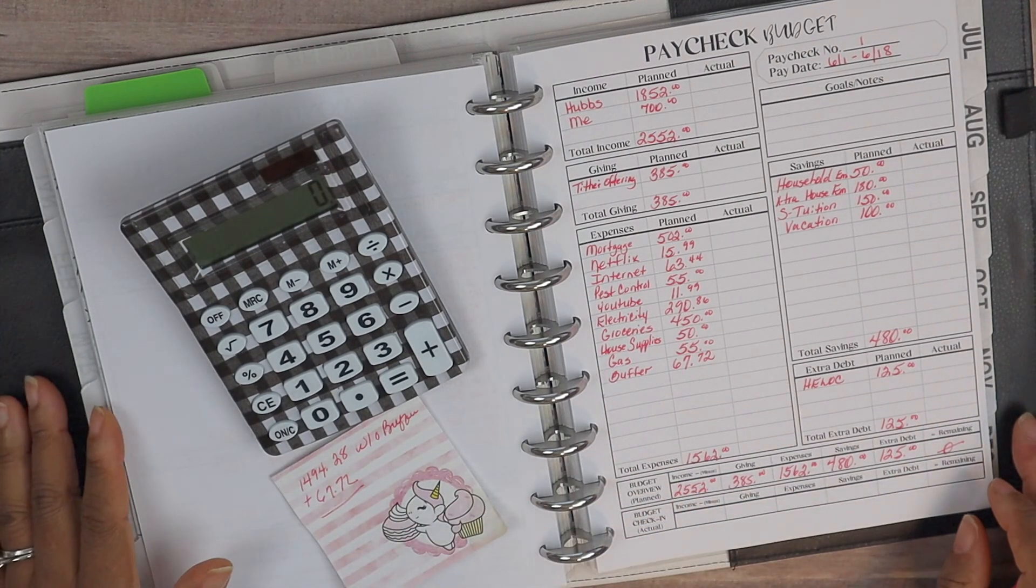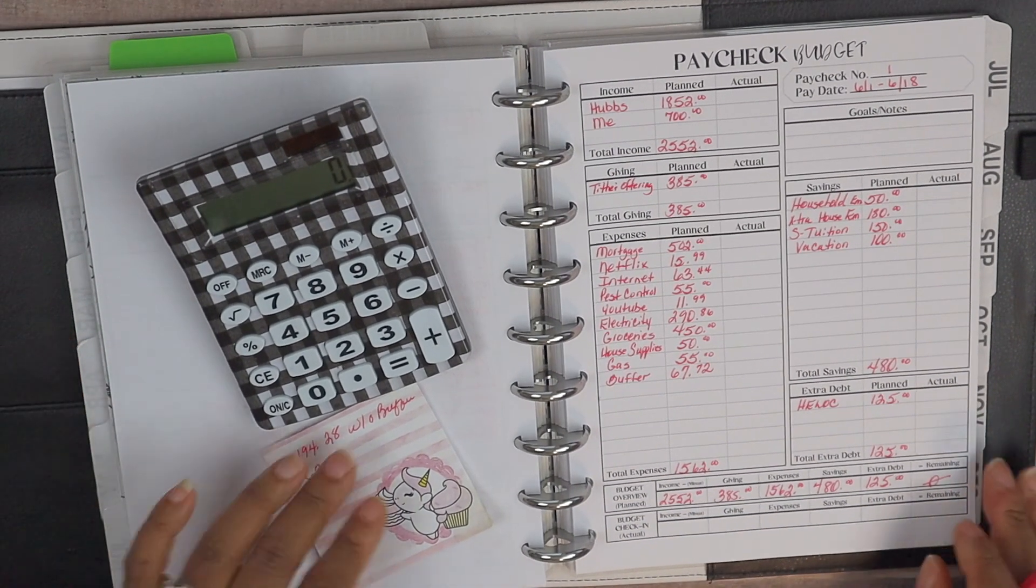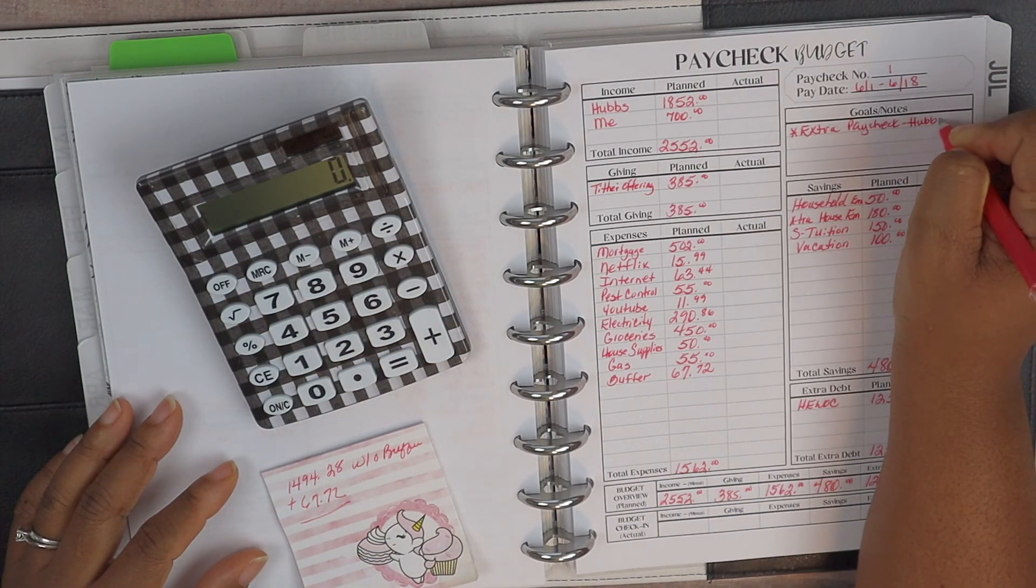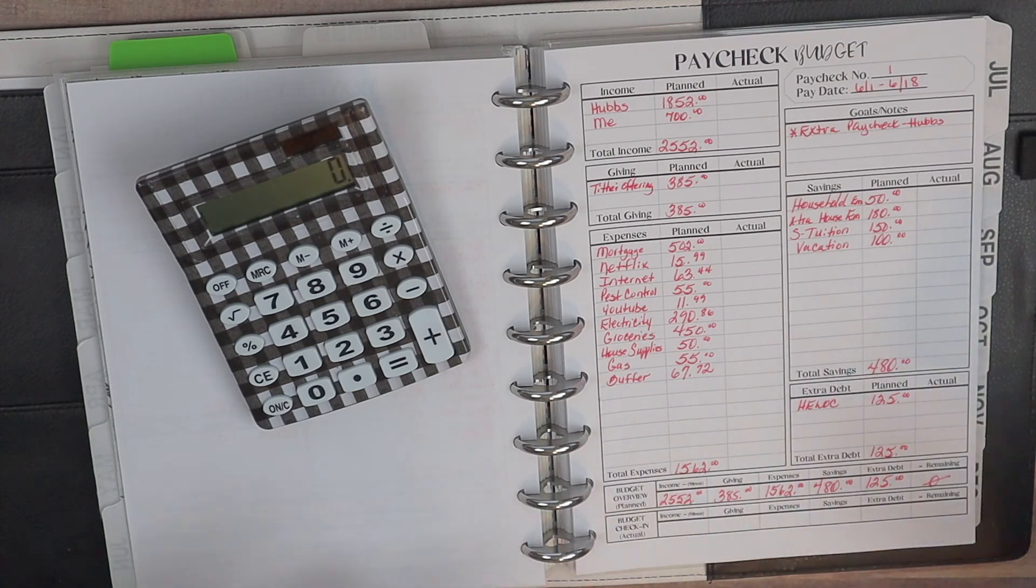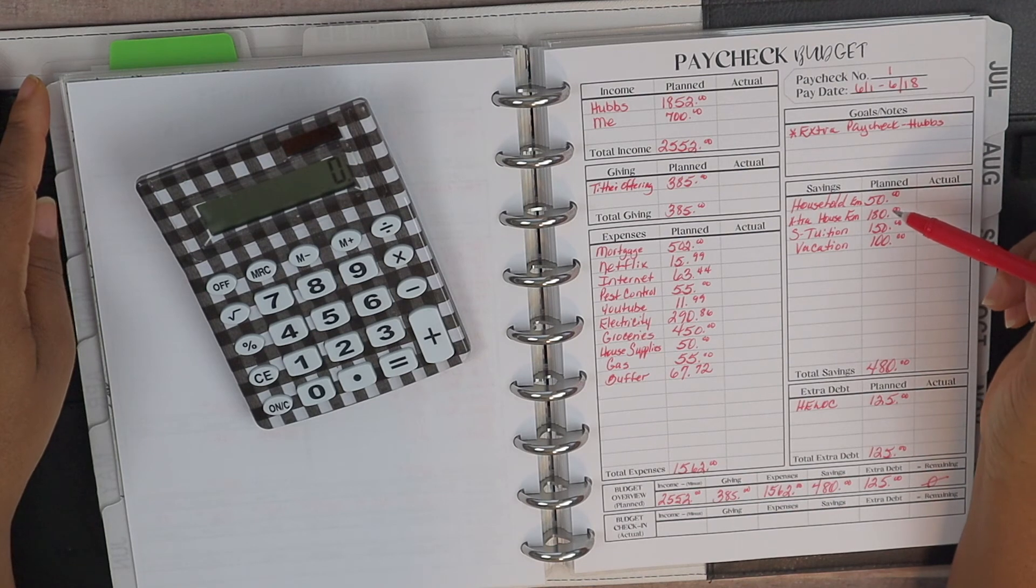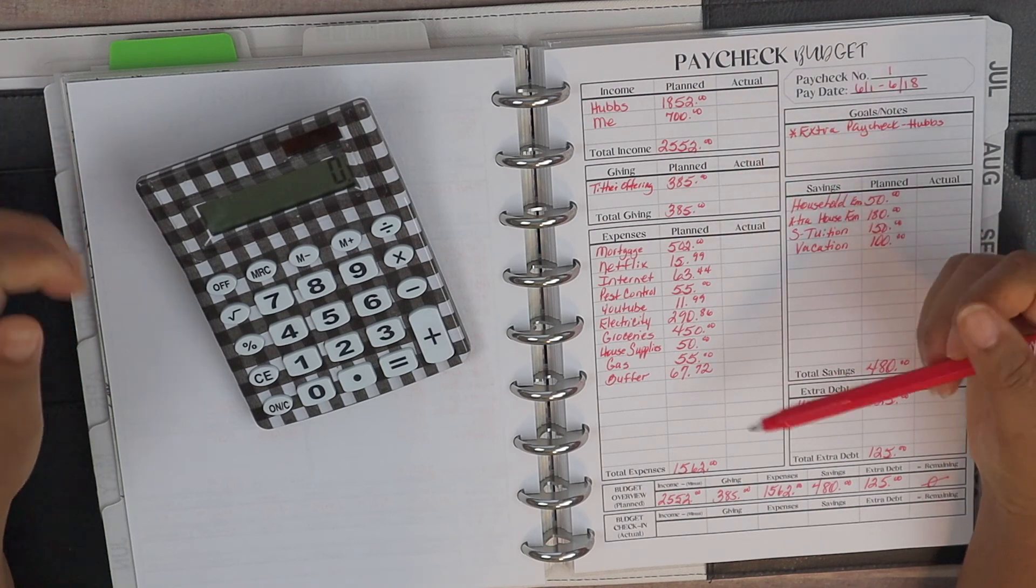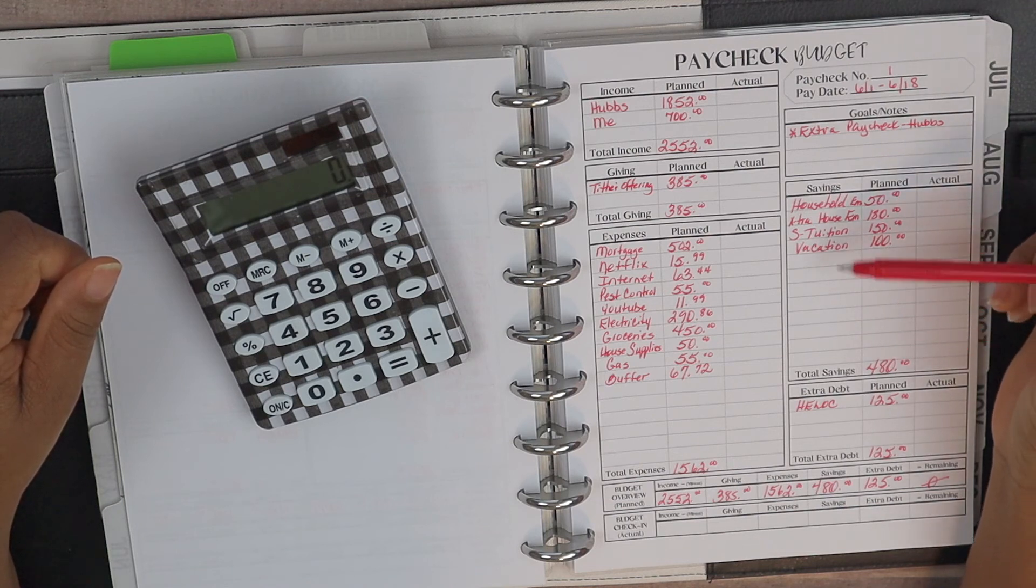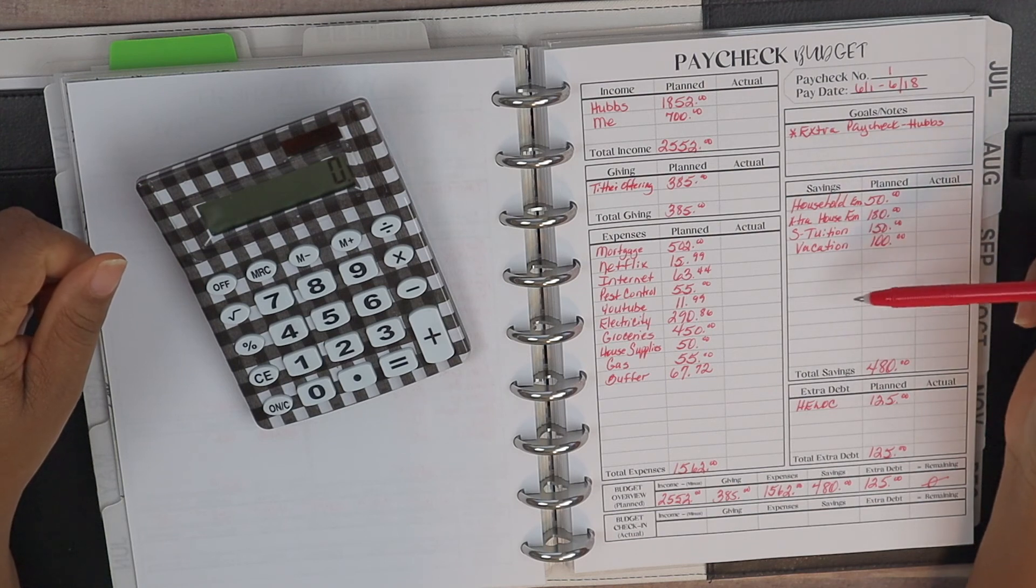All right, that looks really good. So again, this is an extra paycheck for hubs. And normally, the household is actually on our paycheck budget number two. But the way the paycheck falls and the bills fall for this time period, we went ahead and put all of our savings in so we can make sure we have that money set aside during our paycheck budget number one.